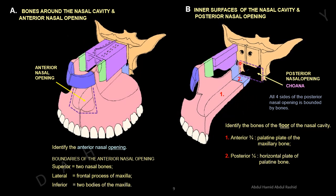Behind here is the posterior nasal opening called the choana. It is bounded superiorly by the body of the sphenoid, on each side by the medial pterygoid plate of the sphenoid, and inferiorly by the horizontal plate of the palatine bones. So all four sides of the posterior opening are bounded by bones.